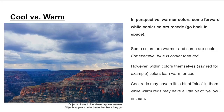Finally, cool versus warm. In perspective, warmer colors come forward and cool colors recede or go back in space. For example, blue is cooler than red. However, colors within themselves — say red, for example — could lean warm or cool. Cool reds may have a little blue in them and warm reds may have a little yellow in them. Notice the reds in the foreground come forward and the blues in the background push back, and we see some atmospheric perspective as well.